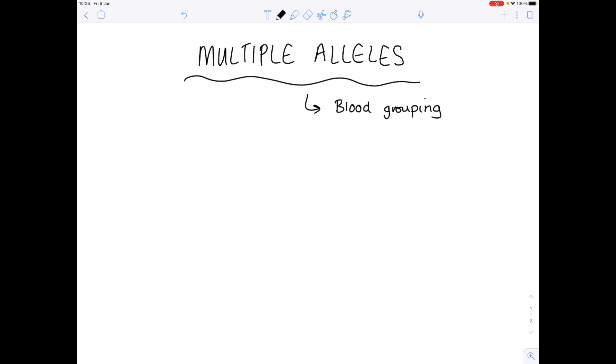So first of all let's start by defining the term multiple alleles and this is when a gene has more than two alleles and a good example of this is human ABO blood groups.